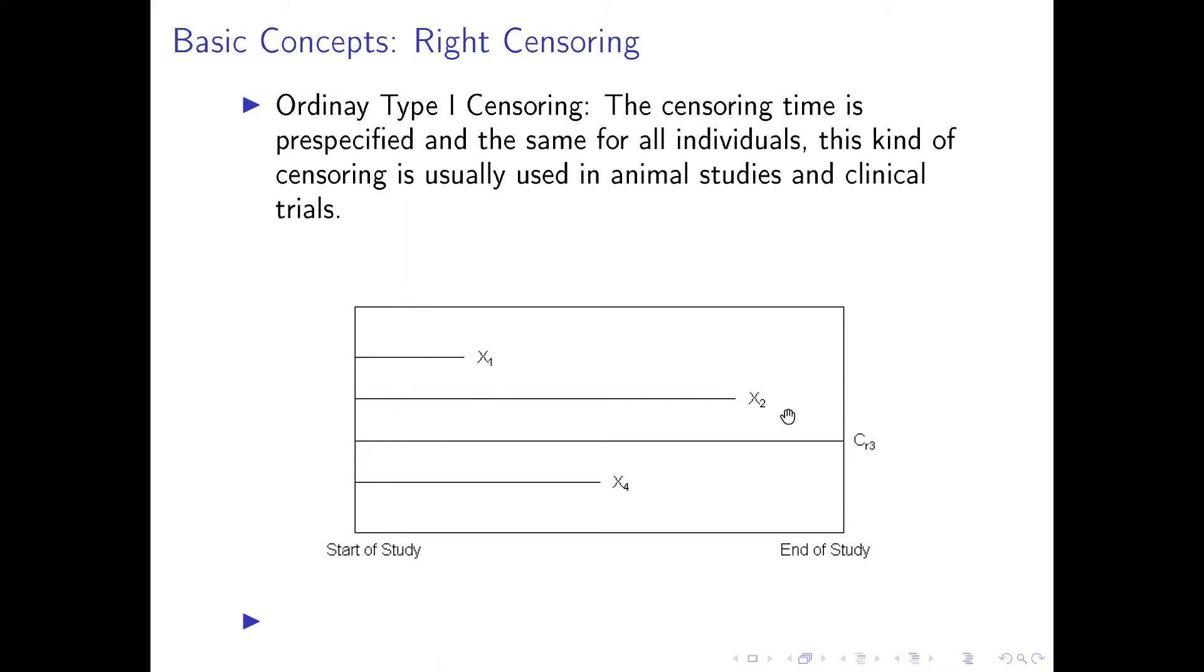And here X1, X2, and X4, their time to event occurred during our observation time interval. Except the third case, it's censored. And the milestone event in this case, if we're talking about a terminal event, occurs after the end of study.